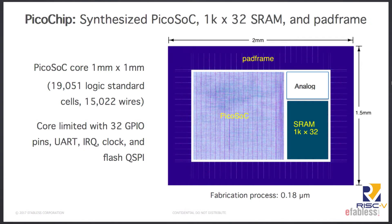This is how the chip is composited before doing routing. As mentioned, you're not blowing up the core by using 180 nanometers — the SoC itself is about one millimeter square. You have room for a small scratch pad SRAM on the side, still have room left over for the analog, and adding the pad frame, the whole thing still fits in about two millimeters by one and a half millimeters.